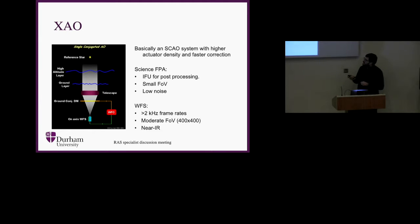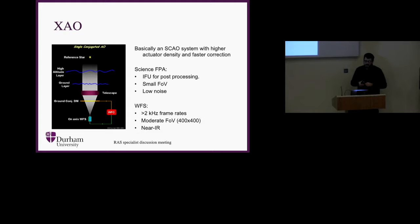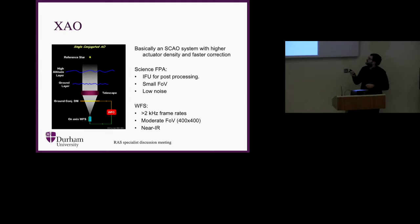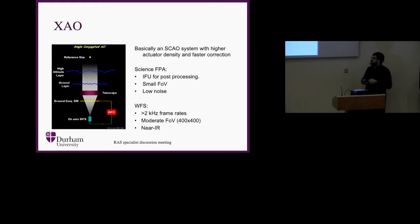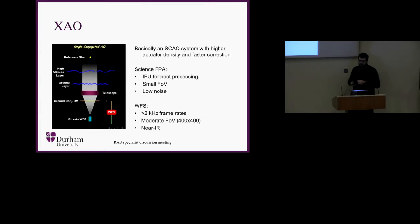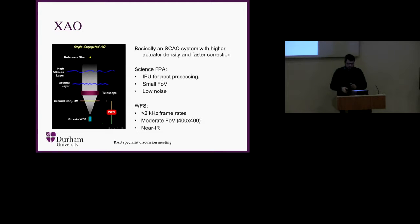Finally, extreme adaptive optics (XAO) is essentially an extreme version of SCAO with higher actuator density and faster correction. The focal plane array would typically be an IFU, required for post-processing to achieve the enhanced contrast ratios needed for very faint or high-contrast targets. For this you need really quite extreme wavefront sensors — something that at the moment is still an open issue, not yet solved even with the current generation of detectors for XAO systems for the next generation ELTs at the higher frame rates required.